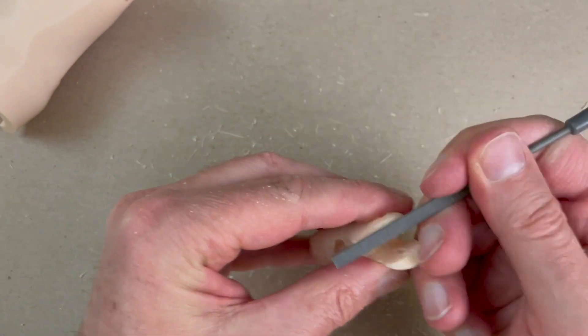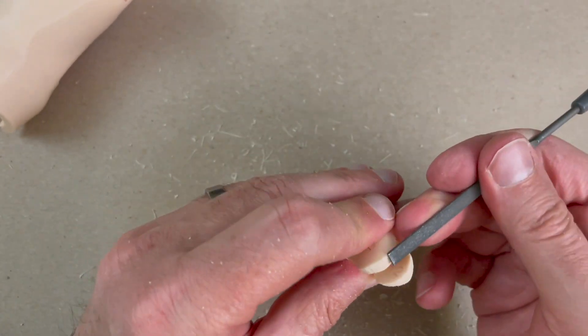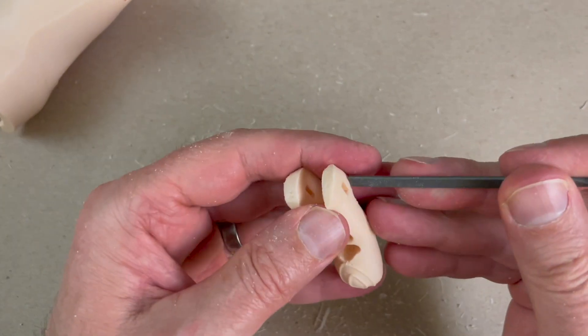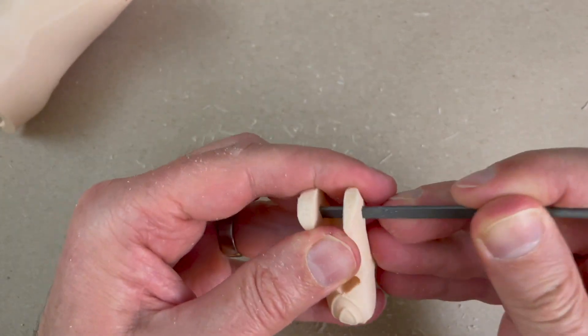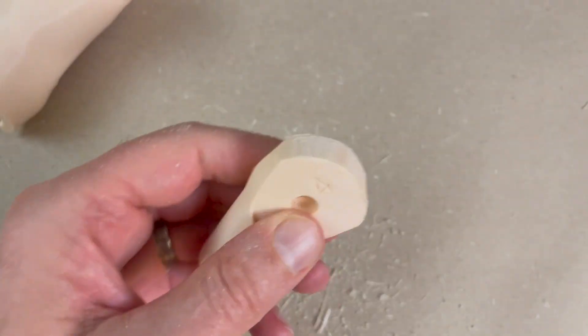Again, I'm going to file all these down, particularly the areas that touch the printer bed. I want these nice and round and smooth. And the area where the hinge goes in, I want that all nice and smooth.